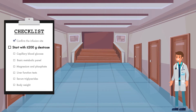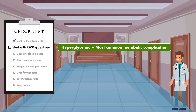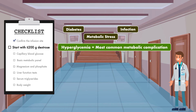The second item on the list is to start the infusion with no more than 200 grams of dextrose. This is done to minimize the risk for hyperglycemia, which is the most common metabolic complication associated with parenteral nutrition. Obviously, this can occur in patients with diabetes. However, it can also occur in patients without diabetes due to metabolic stress, infection, or overfeeding, especially in the context of excessive carbohydrate intake.